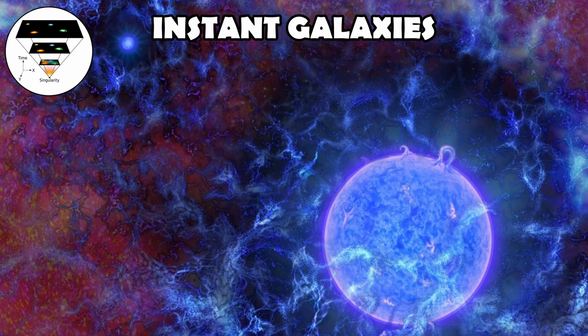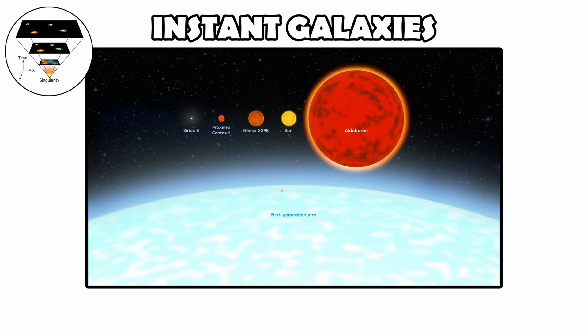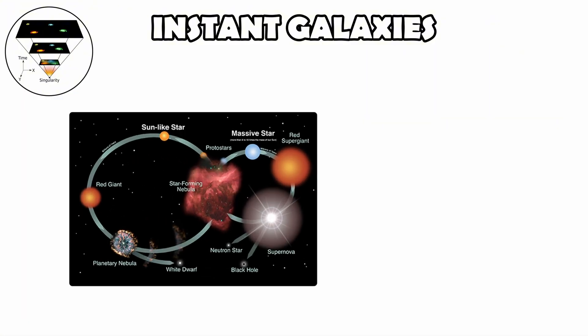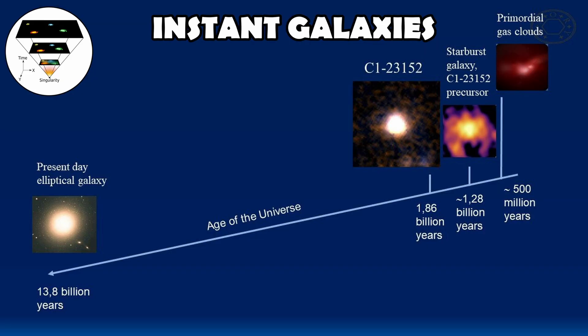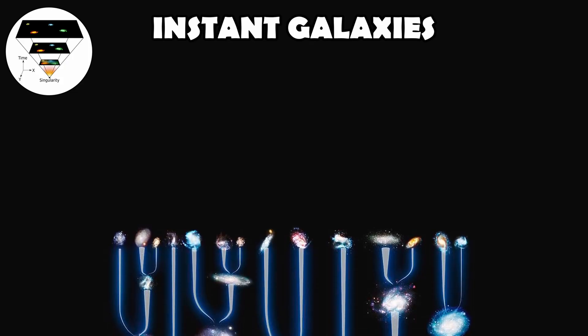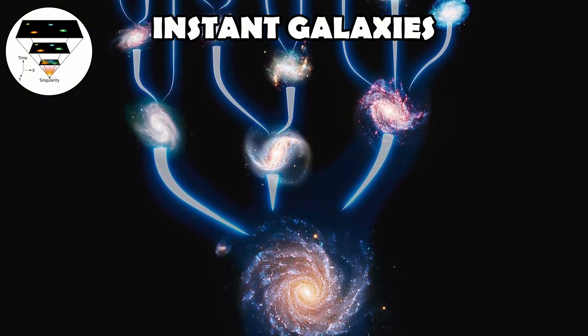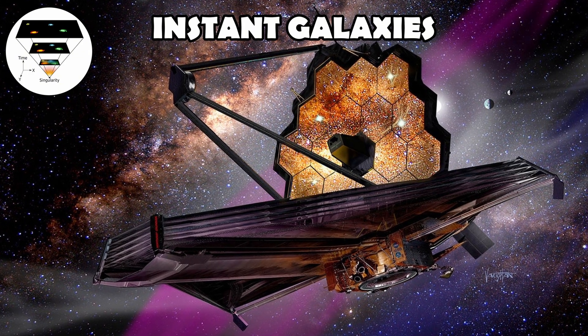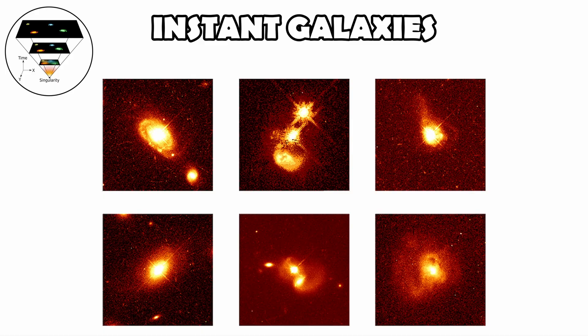The first stars ignited about 100 to 200 million years after the Big Bang. They were massive and short-lived, quickly producing heavier elements and exploding as supernovae. These explosions enriched the surrounding gas, making it possible for later generations of stars to form with a wider variety of elements. Galaxies assembled gradually over hundreds of millions of years. Stars gathered into clusters, clusters merged, and structures on larger scales developed under the pull of gravity. Observations of very distant galaxies allow astronomers to look back in time and watch this process unfold, confirming that stars and galaxies emerged long after the initial expansion.